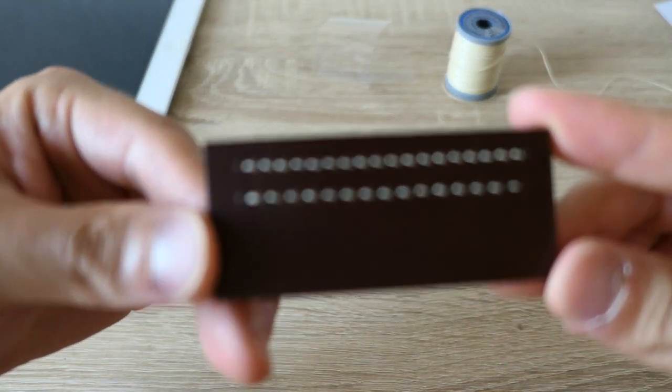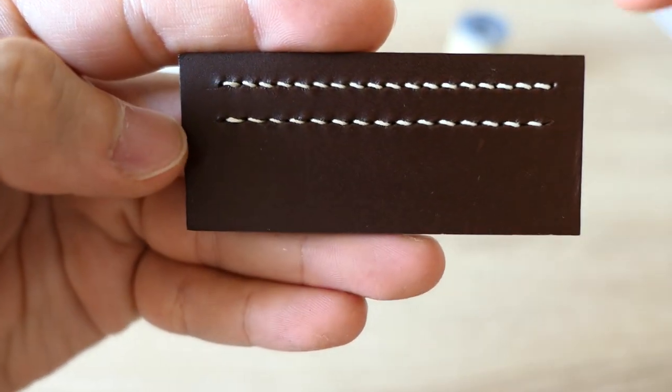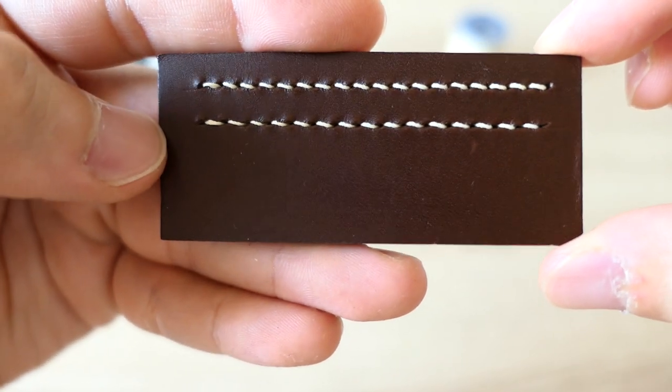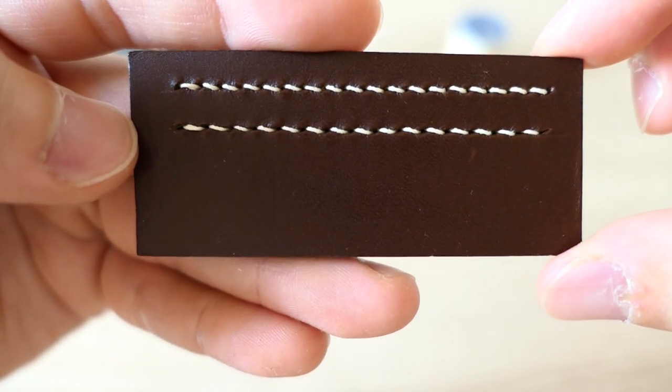And this is the result of the stitching. Top one is a Vergez Blanchard pricking iron, 3.85mm. And the bottom one is Crimson Hide 4.0.